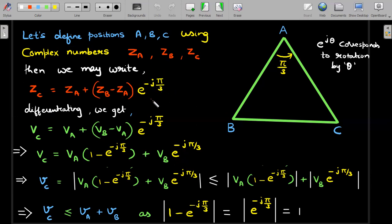zB minus zA is this particular vector. When rotated along this direction it gives you this vector, and that vector when added to zA gives you zC. That's what this equation means. If you are good at complex numbers then you will be able to understand this very clearly.